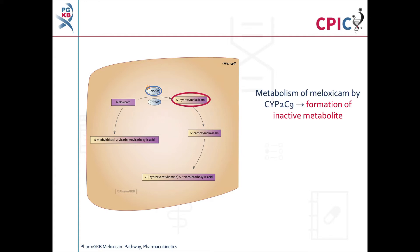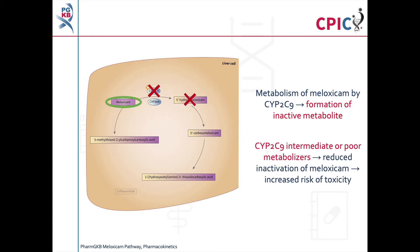Meloxicam is converted to inactive metabolites in the liver. This metabolism is predominantly carried out by CYP2C9. In patients with reduced CYP2C9 function, meloxicam metabolism is decreased. This increases the concentrations of active meloxicam in the body and puts the patient at an increased risk of drug toxicity.